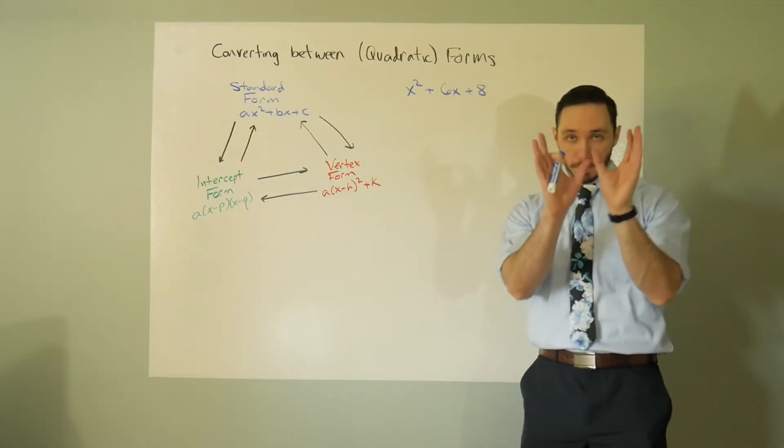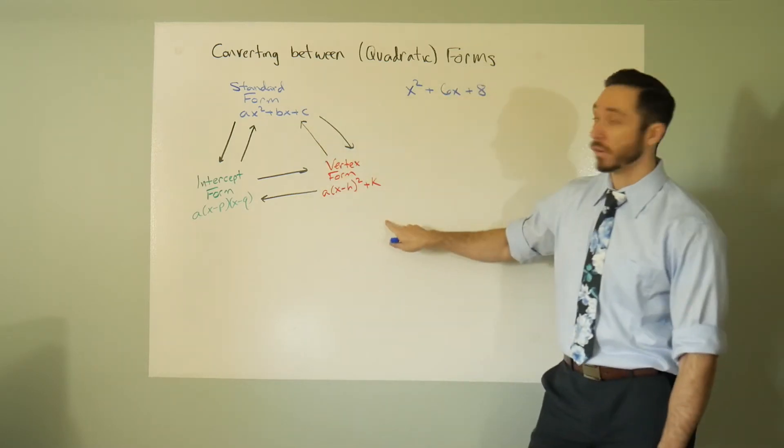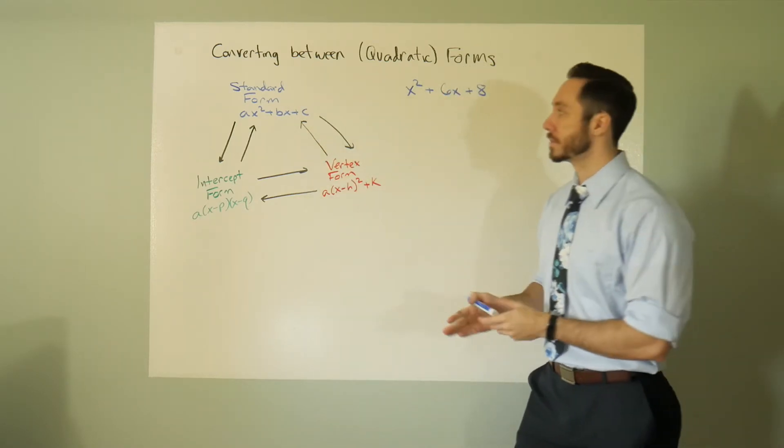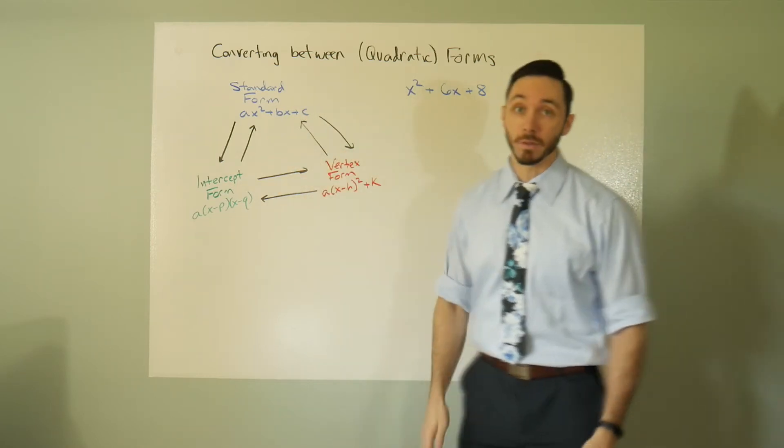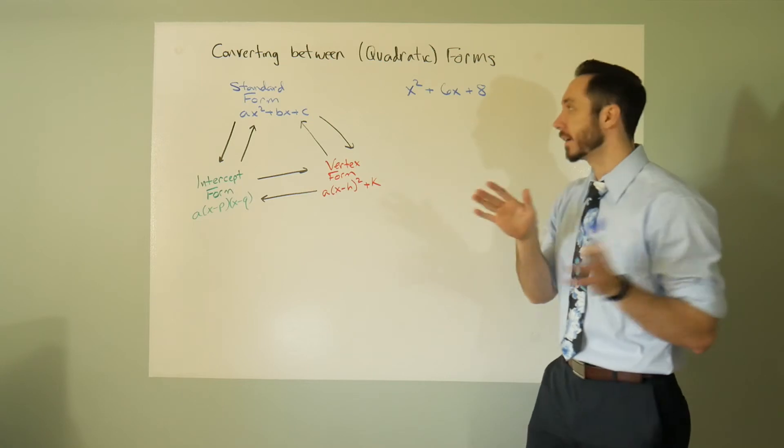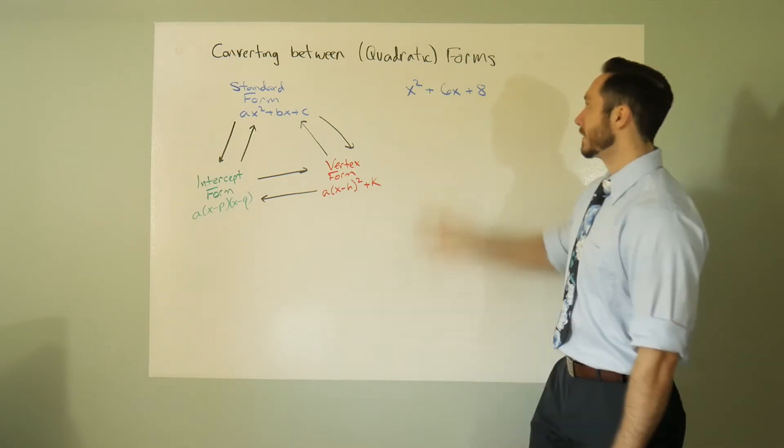Hey math people, there are three forms for a quadratic: standard form, intercept form, and vertex form. So if there's three different forms you want to get between all three of them, there's three times two, there's six different conversion techniques depending on which way you're going and where you're starting from.